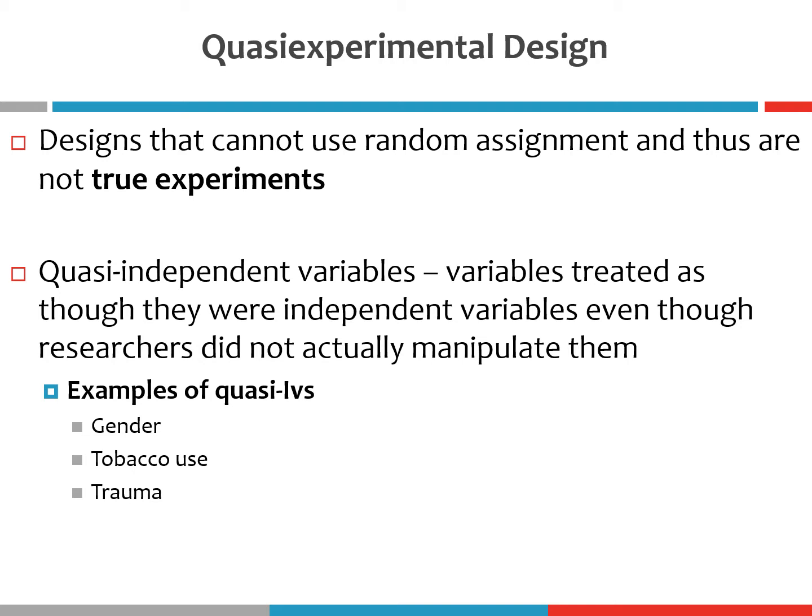One way we can get around that problem is to conduct a correlational study, but another way is by conducting a quasi-experiment. A quasi-experiment is simply a research design that does not use random assignment, and is therefore not a true experiment. In quasi-experimental designs, everything else is pretty much identical to an experiment — we have an independent variable and a dependent variable — except the independent variable is called a quasi-independent variable because the researcher doesn't actually manipulate it.